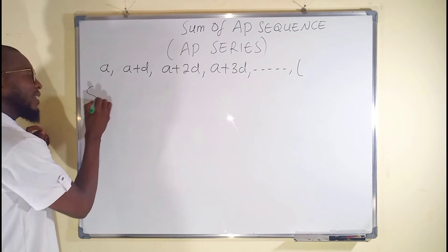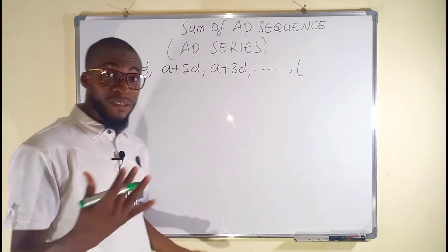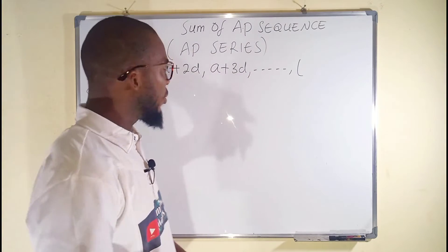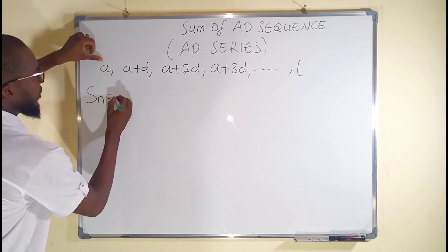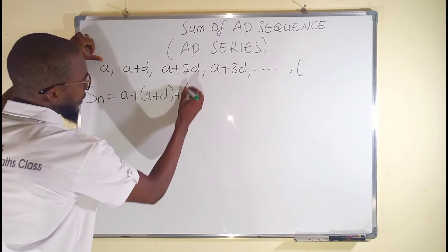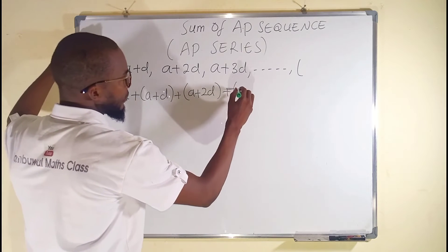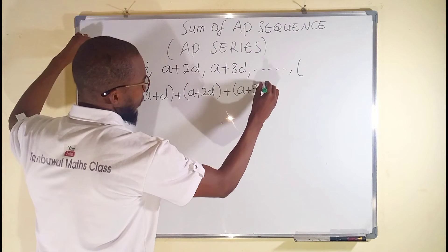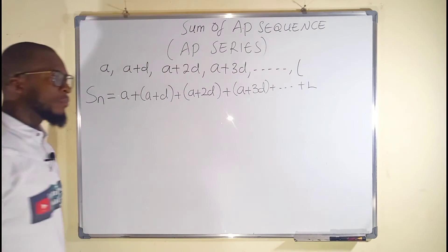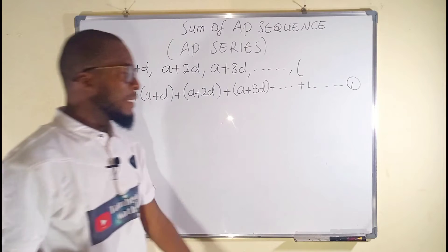Sn, which is the sum of terms known as the series, is obtained by adding all of these terms from the first to the last term. So we write: Sn = a + (a+d) + (a+2d) + (a+3d) + ... + L. We can call this equation number one.